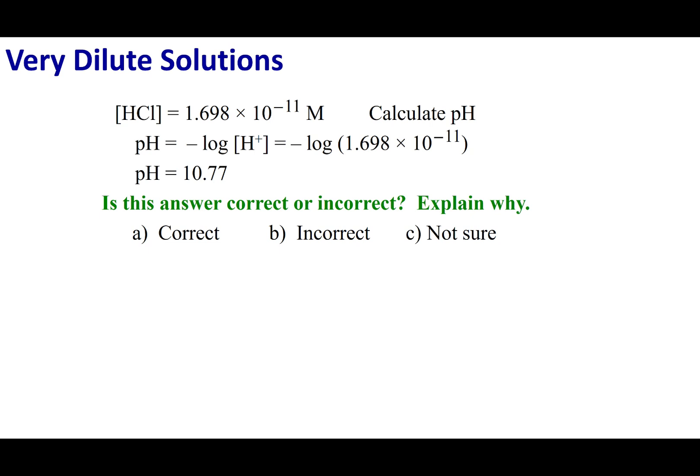To kick off this video, what I want you to do is consider this solution. I'm going to make a very dilute solution of HCl. It's going to be 1.698 times 10 to the negative 11th molar. So super dilute. Now what I'm going to do is I want to calculate the pH of the solution. So what I'm going to assume is that the H plus concentration is going to be 1.698 times 10 to the negative 11th, the same as the concentration of HCl. This gets me a pH of 10.77.